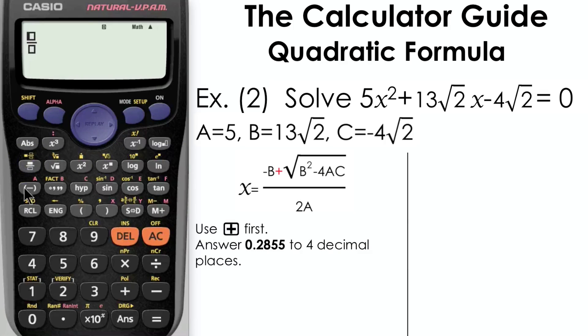Press the fraction button first before we input the formula. Don't forget it's going to be capital letters and we want to use the plus sign first for the first of our two solutions. Be careful to input this correctly and don't forget to navigate to the bottom of the fraction with the replay button to insert the 2A. Just check that that is correct, and here we have our first solution: 0.2855 to 4 decimal places.